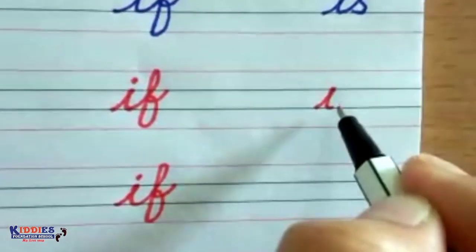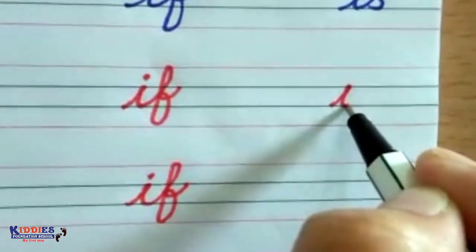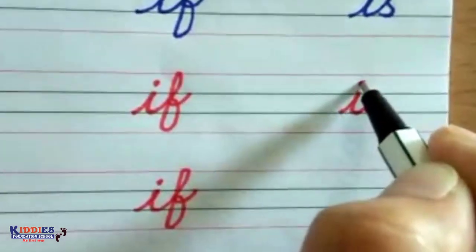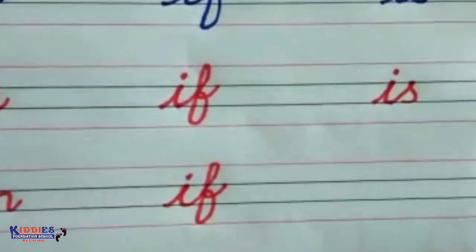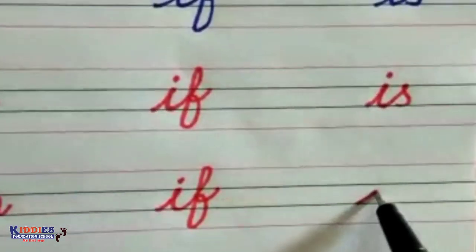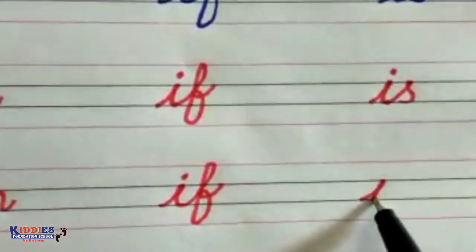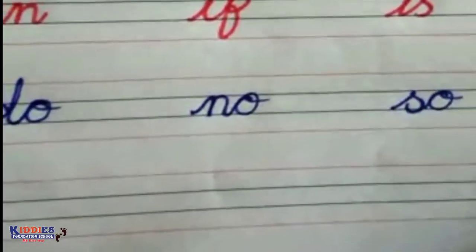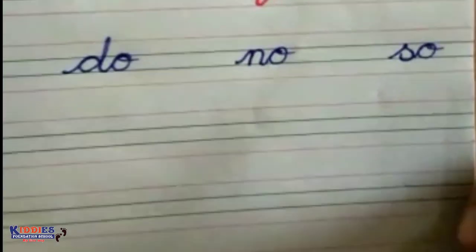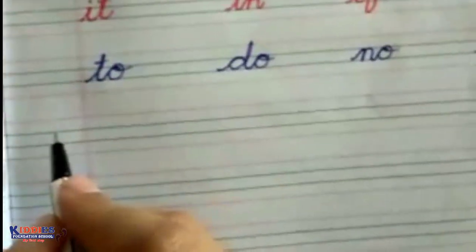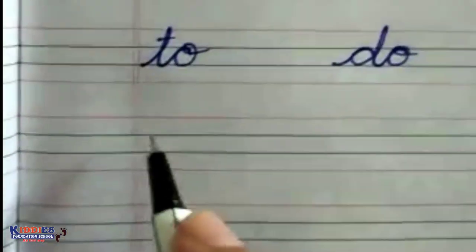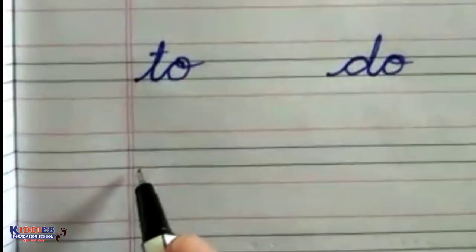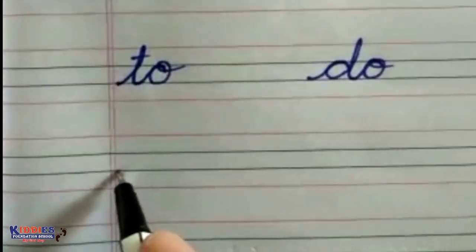Then 'is' — first write 'i' like this, then from here write 's', and put the dot here. Once again: 'i' then 's'. Always write the word by connecting the letters.